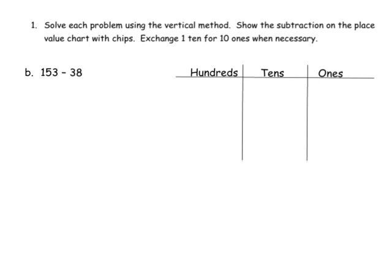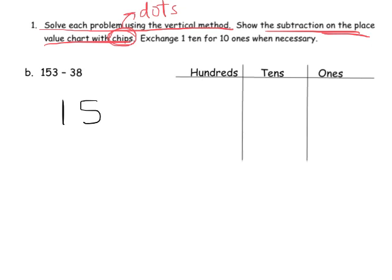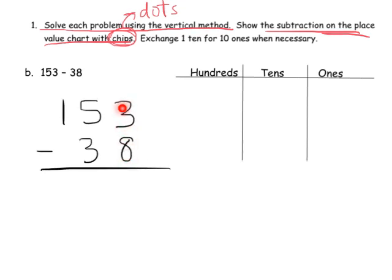In this problem, we are told to solve each problem using the vertical method, and then we're going to use the place value chart. It says to use chips, but we're going to use dots — just drawing the dots rather than actually using chips to verify our answer. We're going to have 153 and subtract 38. Teachers and parents, make sure students are properly lining up the ones place with the ones place, the tens place with the tens place, and the hundreds place with nothing, because students often want to align everything to the left rather than the right.